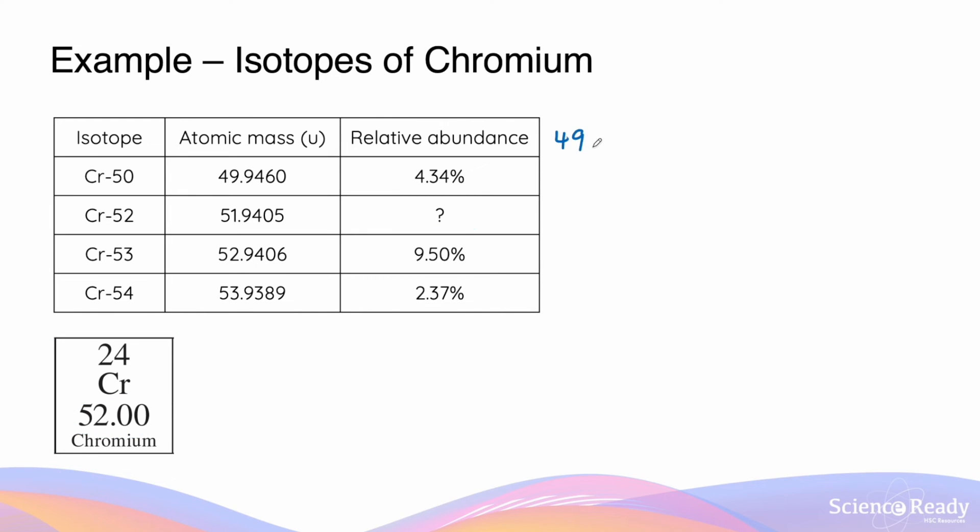So if we take the atomic mass of each isotope, multiply their abundance, and we add them together. In this case, because we don't know what the abundance for the chromium-52 isotope is, we'll just write this down as x.